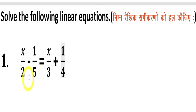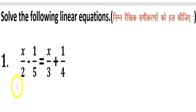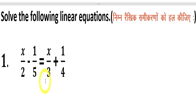First equation: x upon 2 minus 1 upon 5 is equal to x upon 3 plus 1 upon 4. These are simple linear equations. The denominators in this equation are 2, 5, 3, and 4. We will find the LCM of 2, 5, 3, and 4, which is 60.